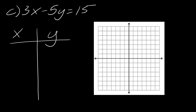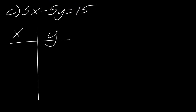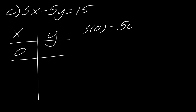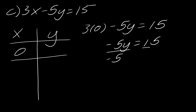One more example with a slightly different form. The last two were in slope-intercept form (y = ...), but now we have 3x − 5y = 15 in standard form. If I plug in 0 for x, this term drops out and I'm left with −5y = 15. Dividing both sides by −5 gives y = −3. That's the first point.